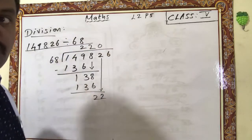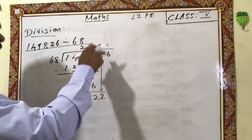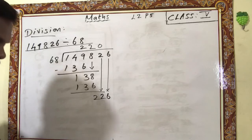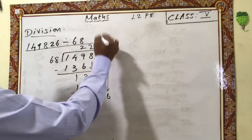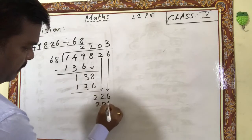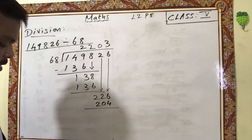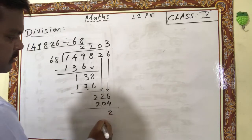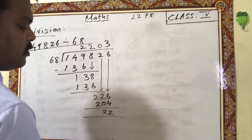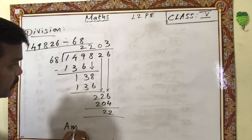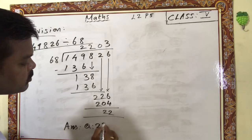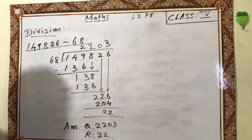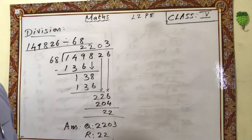22, then after adding zero, bring the next number also — 226. So 3 × 68 is 204. Subtract: 6 minus 4 is 2, then 2 minus 0 is 2, 2 minus 2 is 0. So the answer: quotient is 2,203 and remainder is 22.